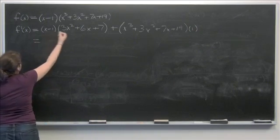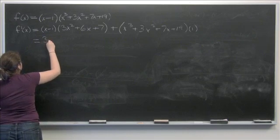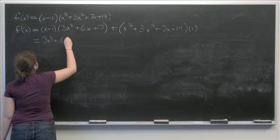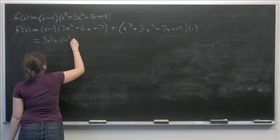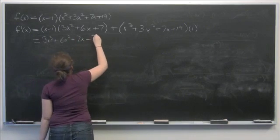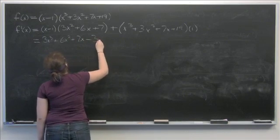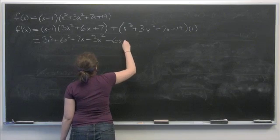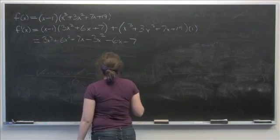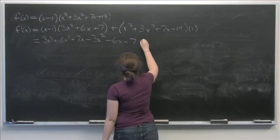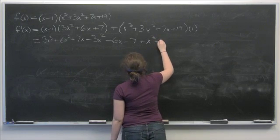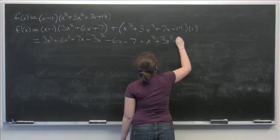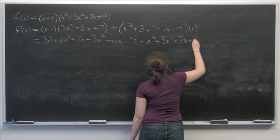Multiplying this out, we have 3x³ + 6x² + 7x - 3x² - 6x - 7 plus x³ + 3x² + 7x + 19.